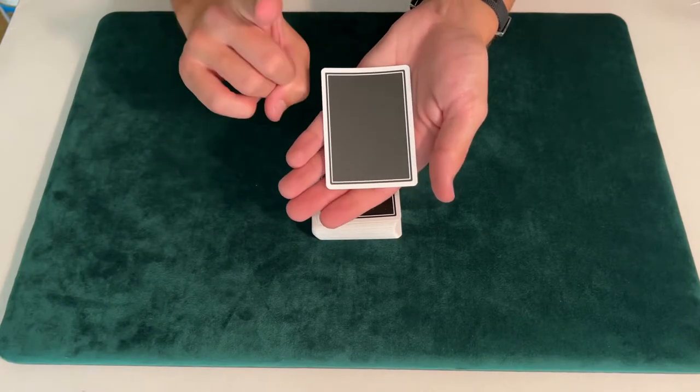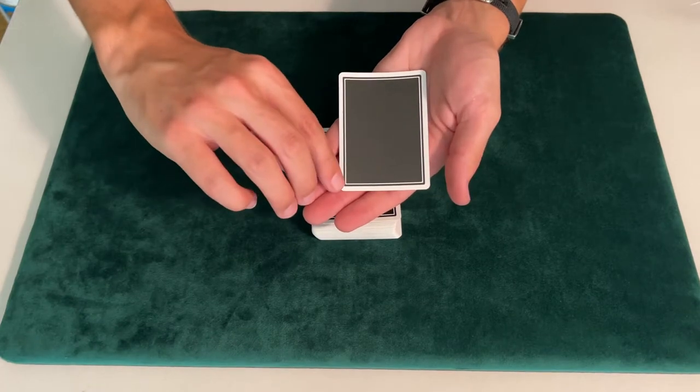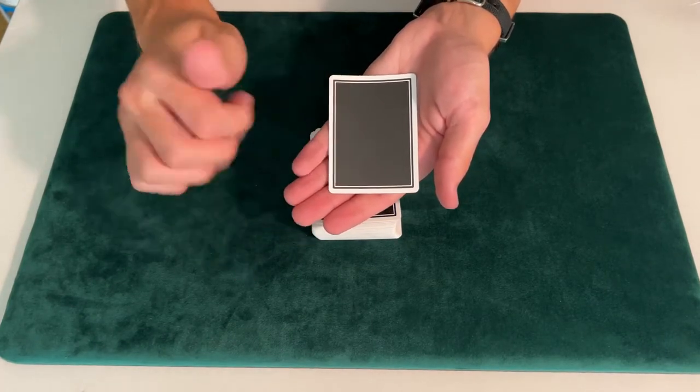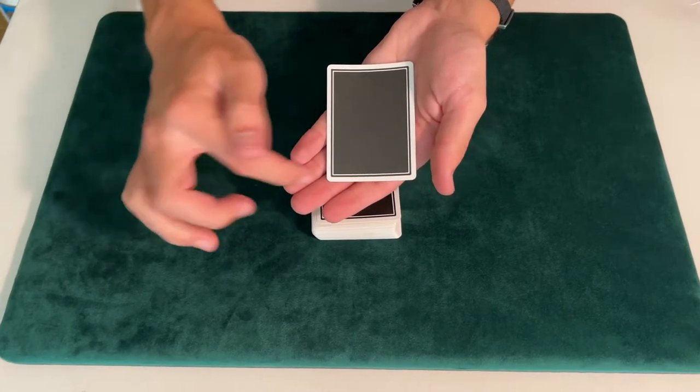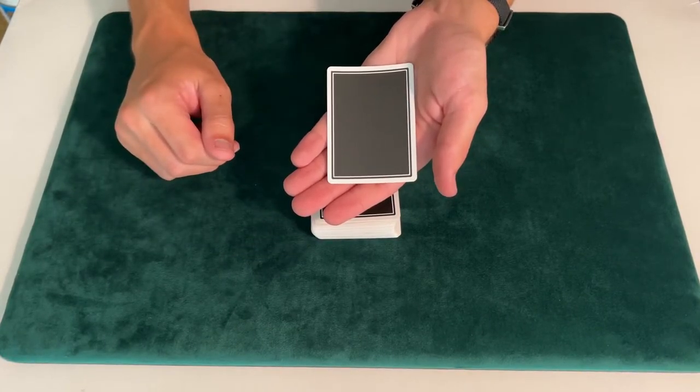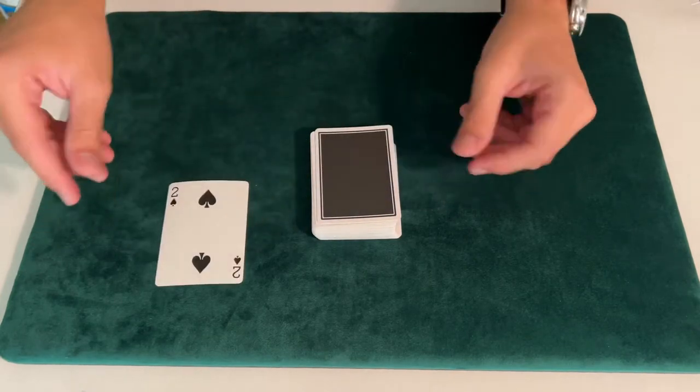So on the outside here, we have one point. That means this card is a spade. Down there on the bottom right of the inside black part, we have a point that is two. Everything else is rounded. I believe this card is a two of spades. Let's see if I'm right. Two of spades, just like that.